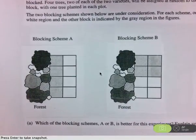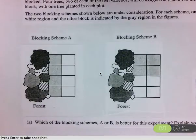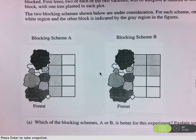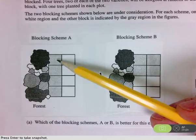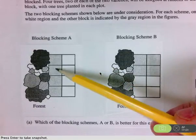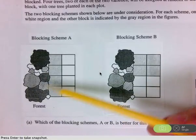So in part A, you're supposed to choose the better blocking scheme, and it is blocking scheme A. So explaining your answer, remember that in a block we want a group of comparable units. All of these squares, all of these plots are comparable because they are all next to the forest. So all of them will share the same effect from the forest.